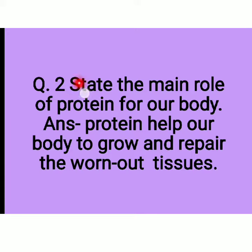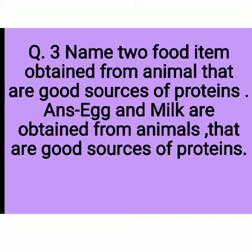Question 2: State the main role of protein in our body. Answer: Protein helps our body to grow and repair the worn out tissues. Next question: Name two food items obtained from animals that are good sources of proteins. Answer: Egg and milk are obtained from animals that are good sources of proteins.